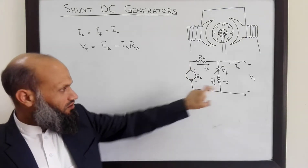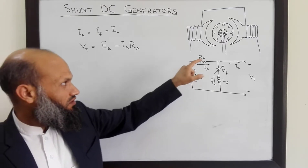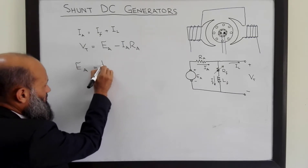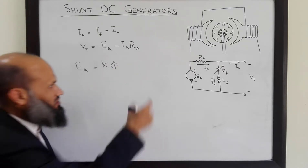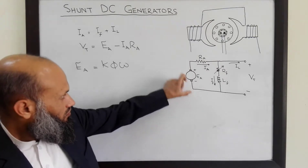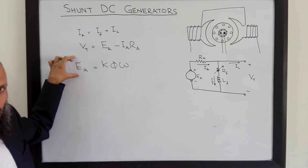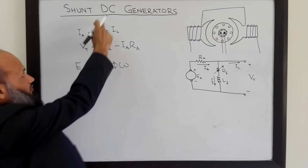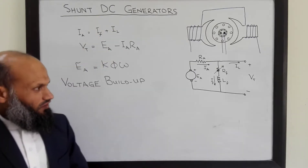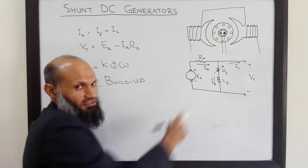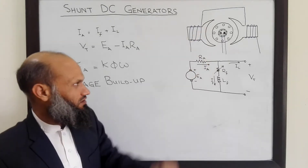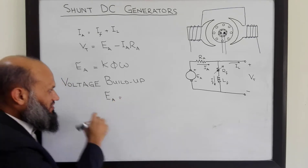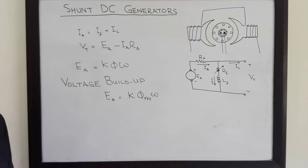Now there is one question: initially there is no generated voltage, so there will be no field current. What will happen if we start rotating the rotor of the generator? We know the generated voltage E_A is given by k multiplied by the flux in the machine and the speed of rotation. Since there is no current, would we get a generated voltage? To understand this, we study the process of voltage buildup in shunt DC generators.